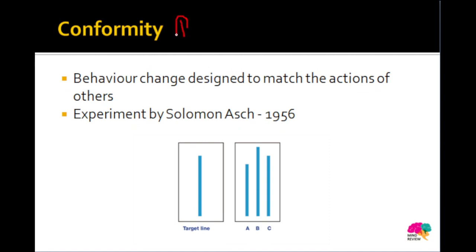The first type of social influence is conformity. Conformity mein kya hota hai — behavior change which is designed to match the action of others. Doosre log jaise behave kar rahe hain, hum bhi waise hi behave karna chahte hain, taaki woh log hume accept karein. For example, in school when there is a popular group, other children also begin to follow how that group behaves — slightly conforming to their actions so that the popular group accepts them too.